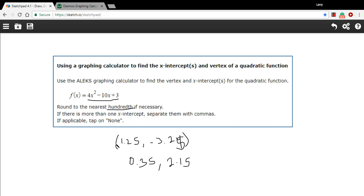All right, so there's our vertex and our x-intercepts. And that's how to use a graphing calculator to find these points in a quadratic equation. Thank you.